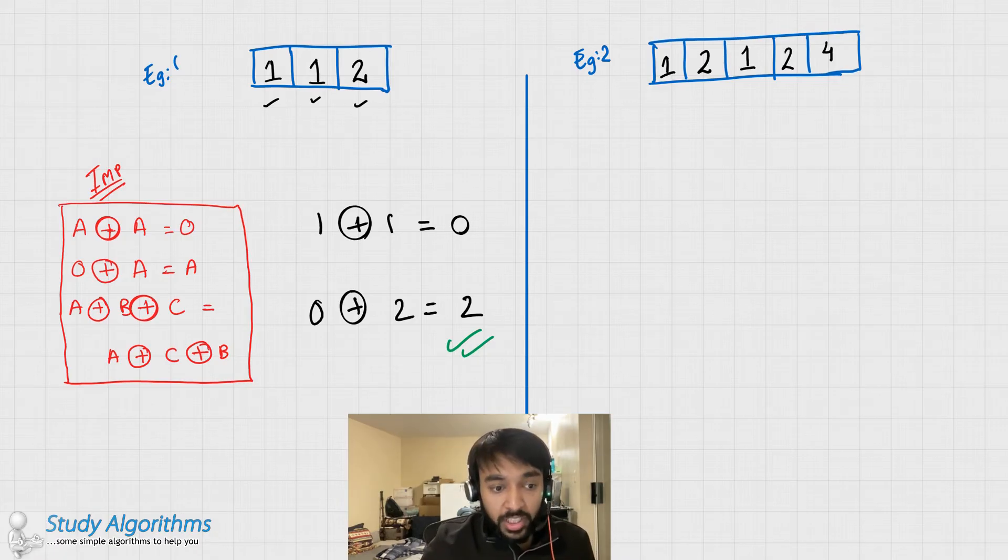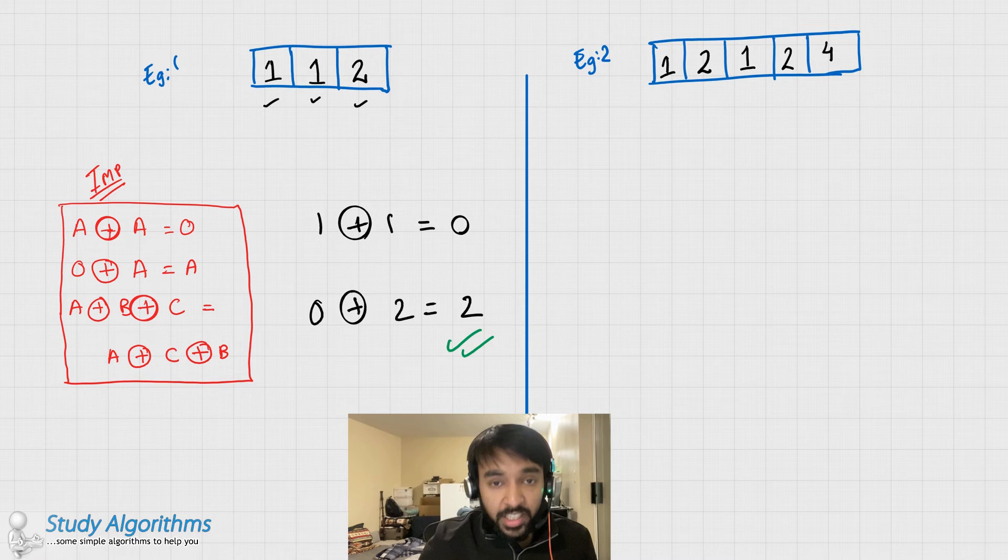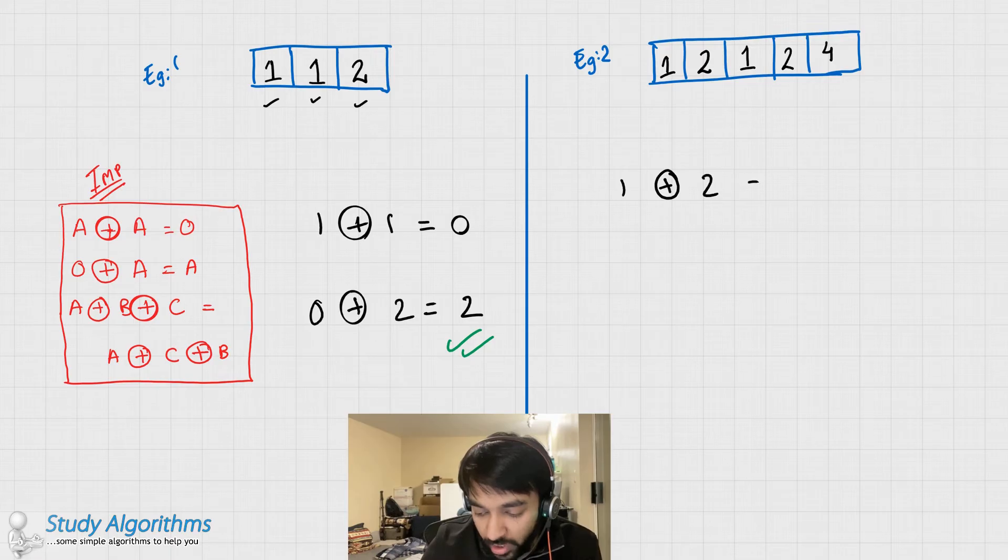Now this method would work even if there are more than 3 elements in the array. Let us take another example that has 5 elements. So in this case, when you would go about XORing the elements, you would get 1 XOR 2 equals to something.